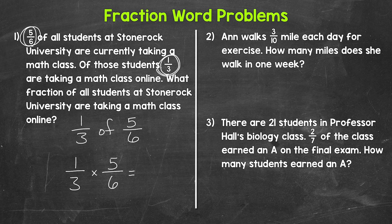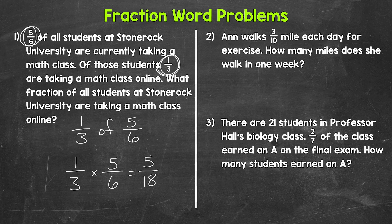When we multiply fractions, we multiply straight across — numerator times numerator and denominator times denominator. So one times five gives us five, and three times six gives us 18. We end up with five-eighteenths — that's the fraction of all students at Stone Rock University taking a math class online. Five-eighteenths is in simplest form, so we are done.